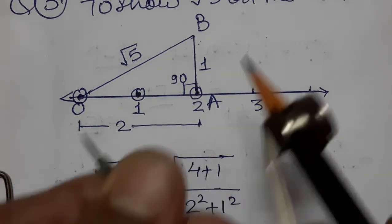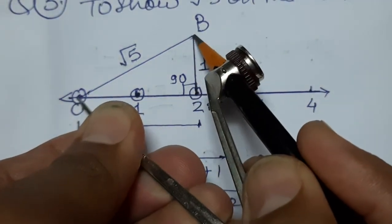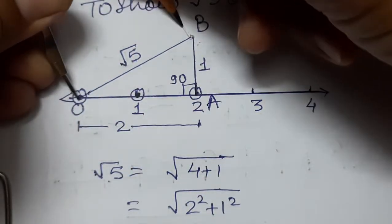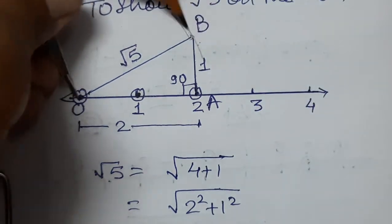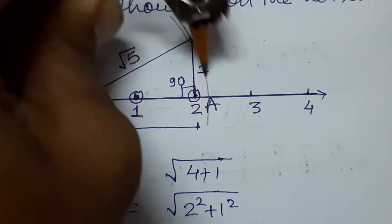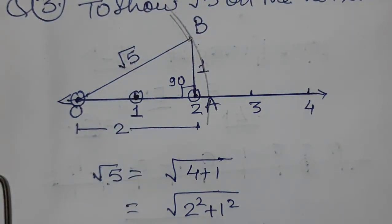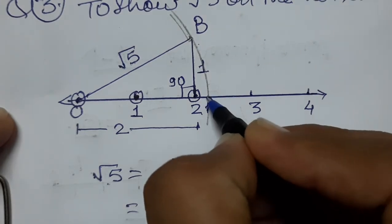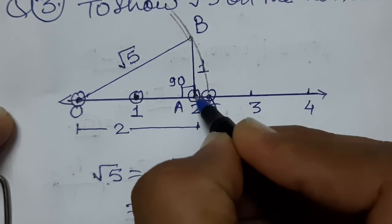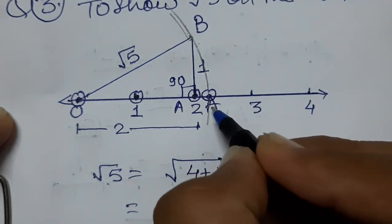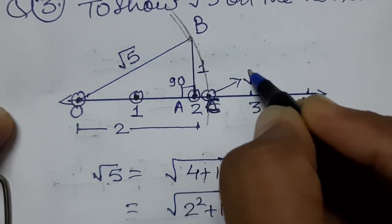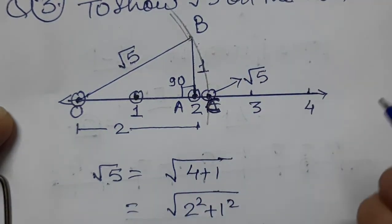We name the points: O is the origin, A is at 2 on the number line, and B is the top of the perpendicular. So OB = √5. Now we take a compass from O to B and draw an arc on the number line — this gives point C.